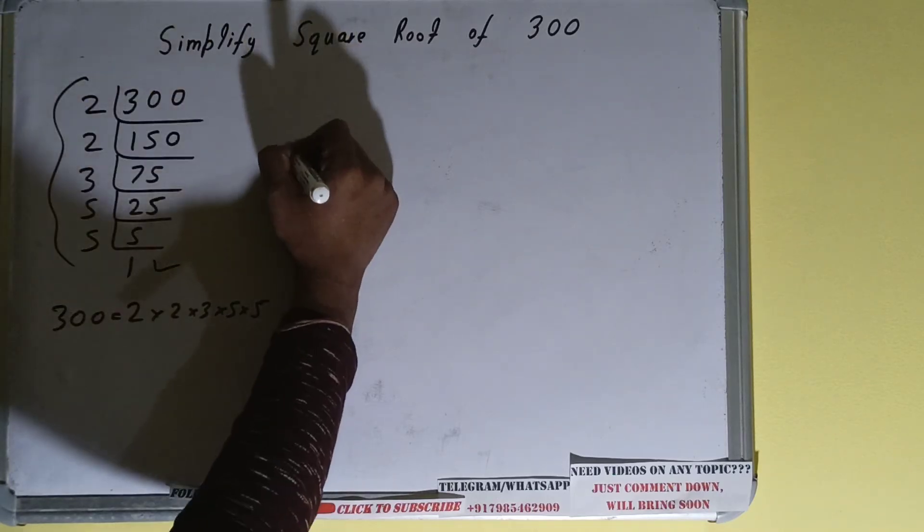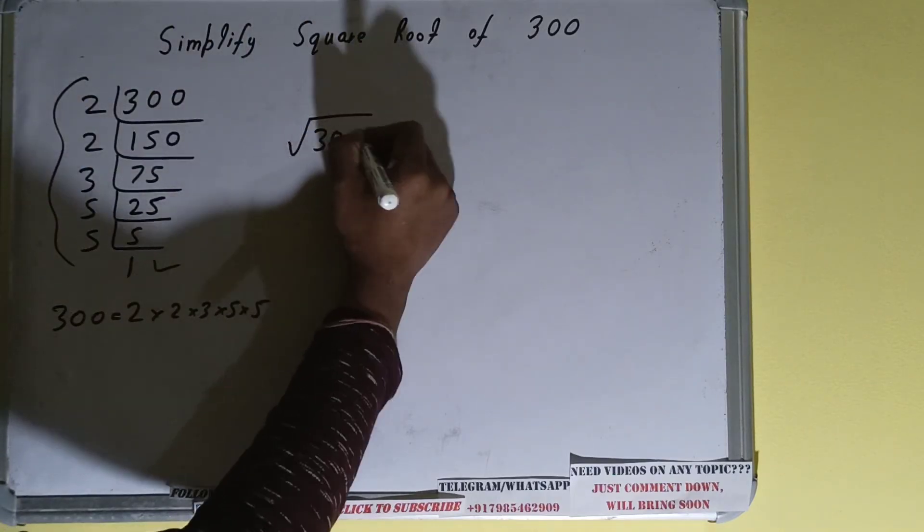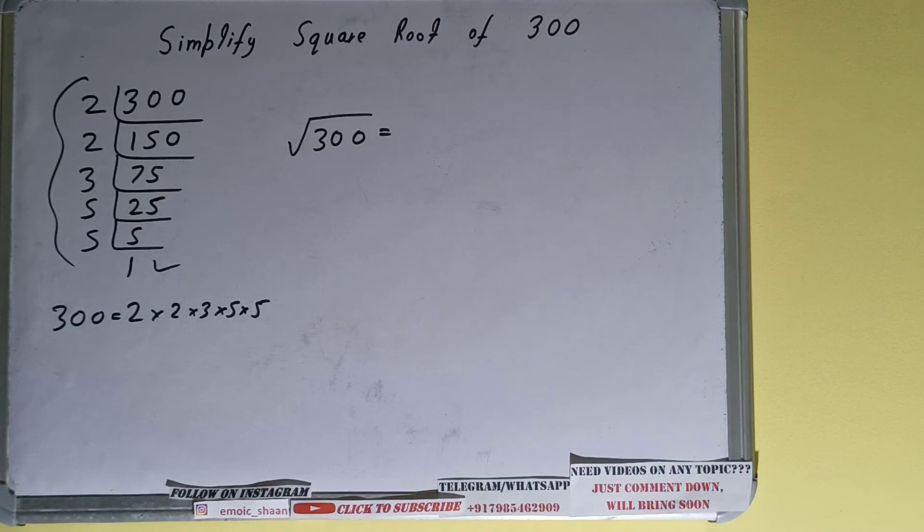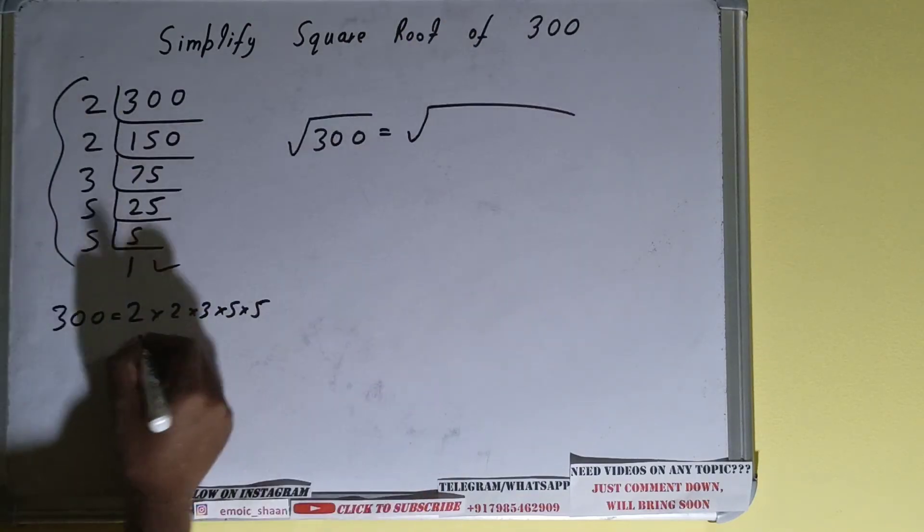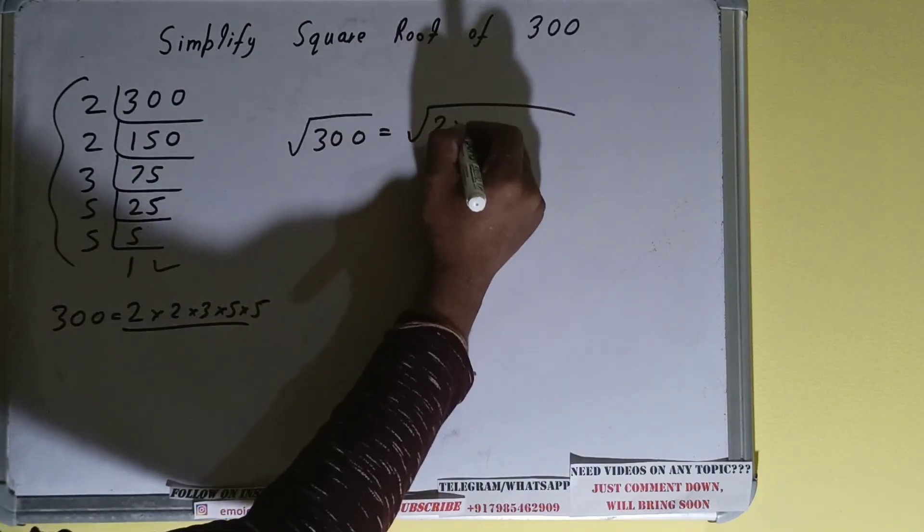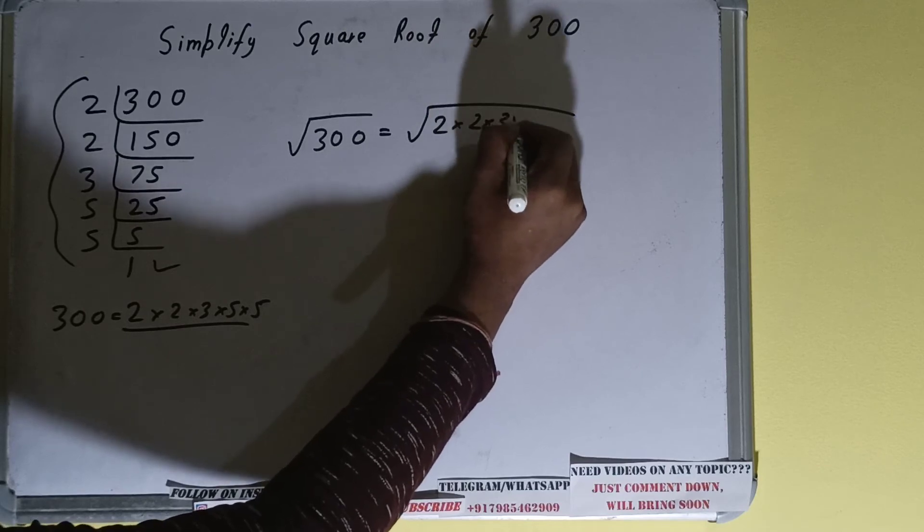Now coming back to our question, we need to simplify the square root of 300. So instead of the number 300, we can write its prime factors, that is 2 × 2 × 3 × 5 × 5.